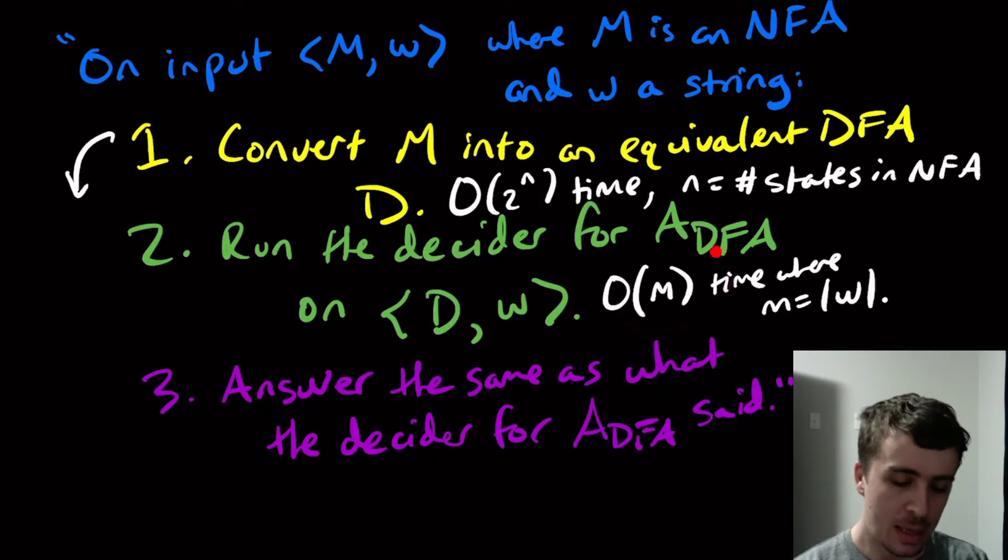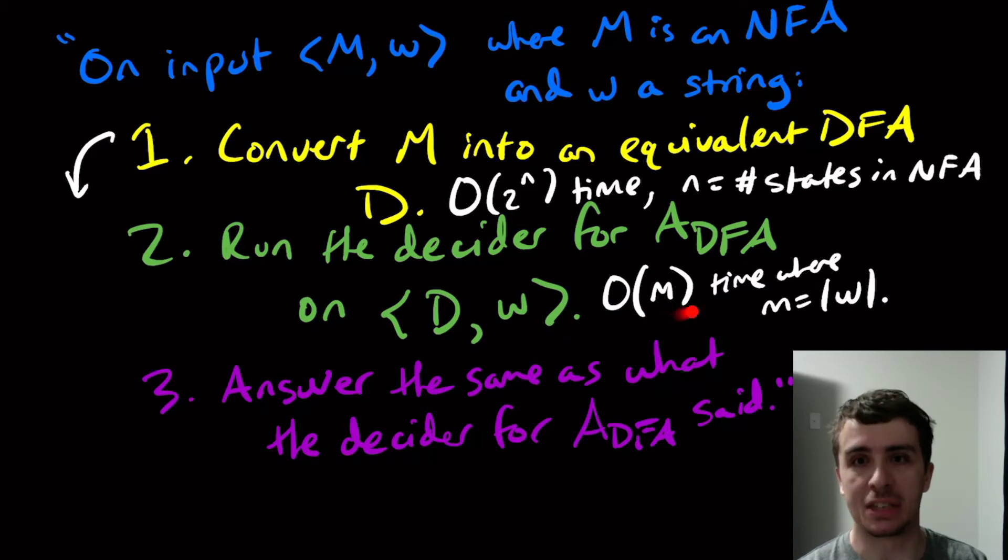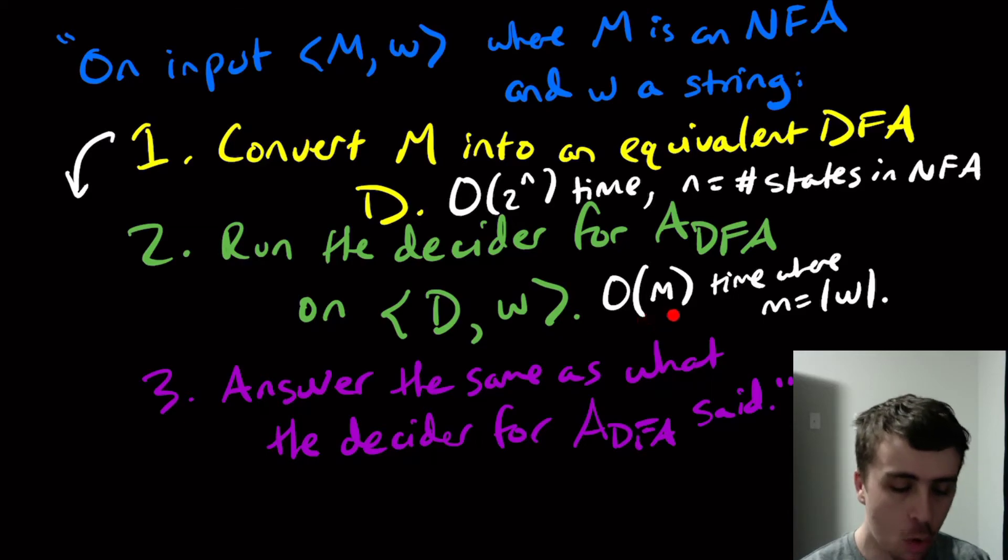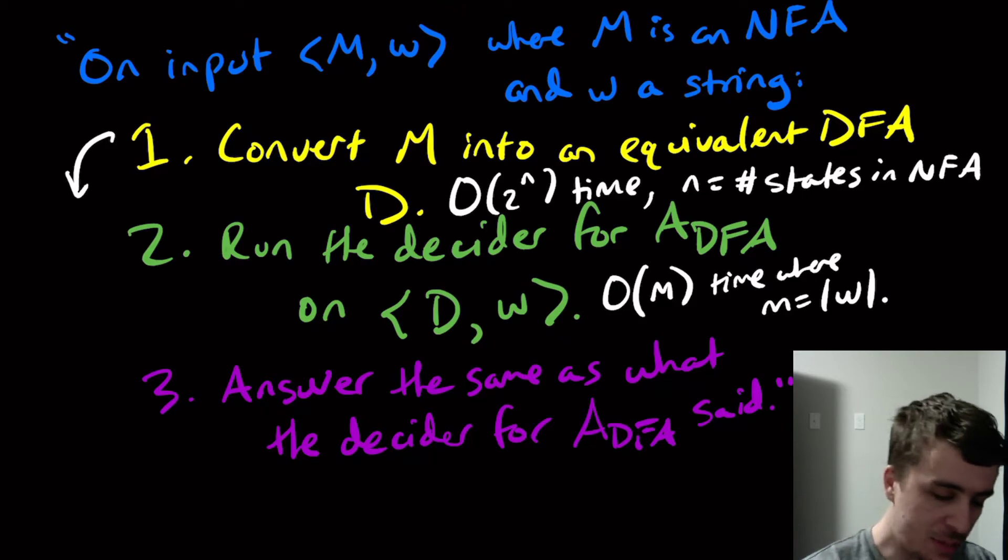So they're not really comparable necessarily, but 2^N looks way worse than the length of the input. So this is linear in the size of the input, right? So it's just going through the string once or a constant number of times. It's just a constant times the length of the string. Here it's exponential in the size of the input DFA. So how can we make this faster?